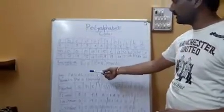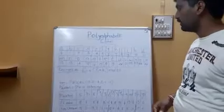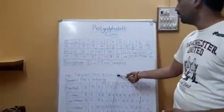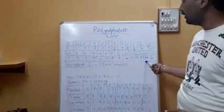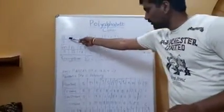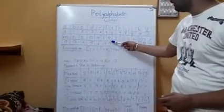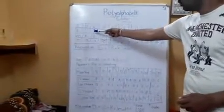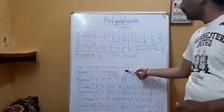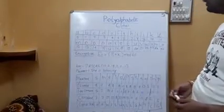In this example, we have taken the key as PASCAL and the plain text as 'she is listening.' For PASCAL, we write its numerical values from the table: P equals 15, A equals 0, S equals 18, C equals 2, A equals 0, L equals 11. So PASCAL in numeric format is 15, 0, 18, 2, 0, 11.